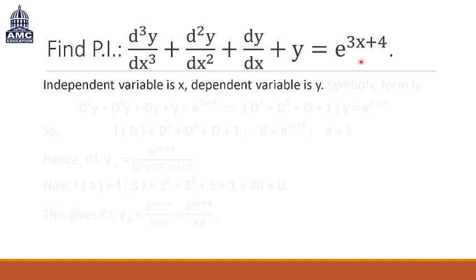Now what we do is write down the symbolic form of the equation. The symbolic form gives us capital D³y in place of d³y/dx³, and capital D²y in place of the second order derivative term, and Dy in place of the first order derivative term. Please remember that capital D is the differential operator with respect to the independent variable x, and then plus y is equal to e raised to the power 3x plus 4.